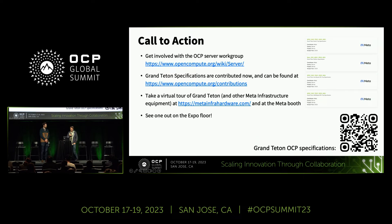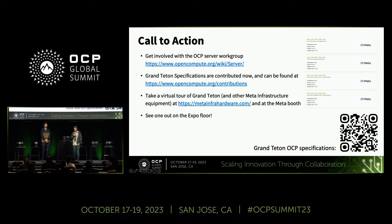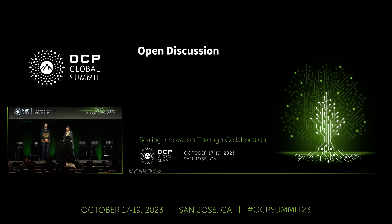That brings us to our final slide — the call to action. As indicated earlier, these specs are contributed, so you can go to the OCP contribution website; they're there today. There's a QR code if you have a phone that will bring you right there. This is all part of the OCP server workgroup. I'd encourage anyone interested to look at recordings and participate. On the floor today there is a Grand Teton on display. You can take a virtual tour within the Meta booth, or go to meta-infra-hardware.com where there are different flavors of the tour, not just Grand Teton but a bunch of other Meta infrastructure you can explore.